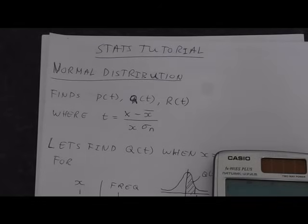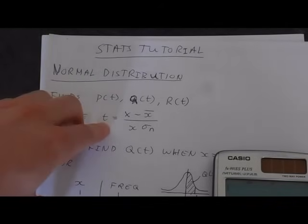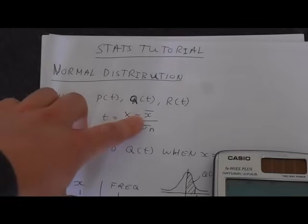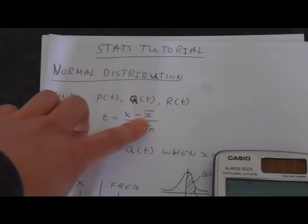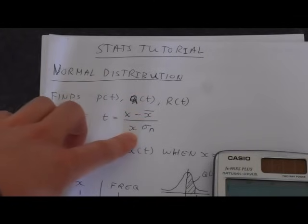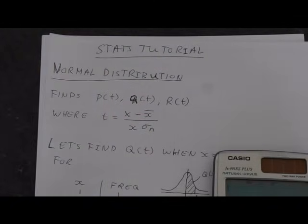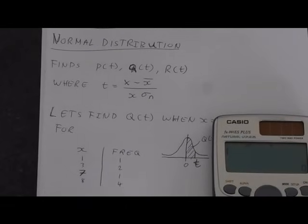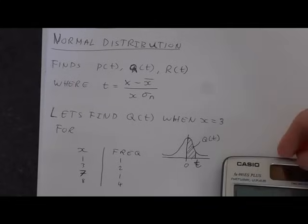The normal distribution lets us find things like P of t, Q of t, and R of t, where your t is what's called the normalized function, and is an X data point subtracted from the mean of the X data, divided by that X point times the standard deviation.